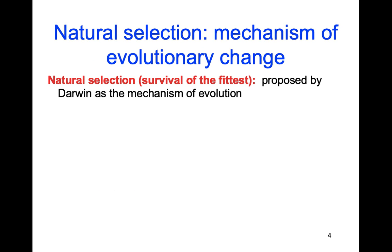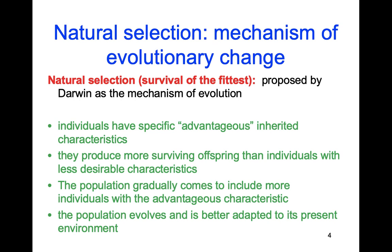Darwin we also associate with the term natural selection, which we call survival of the fittest — those two terms are interchangeable. Individuals who are best fitted to the environment will be able to survive and then pass those genes on to the next generation. What traits are advantageous depends on where you are. For polar bears, it's advantageous to have white fur — they blend in, and their offspring with white fur will pass those genes on to the next generation.